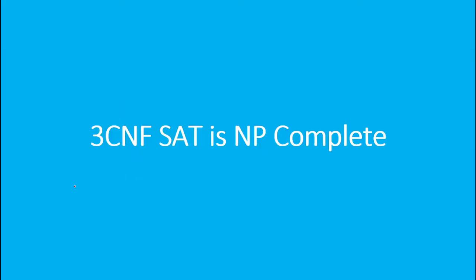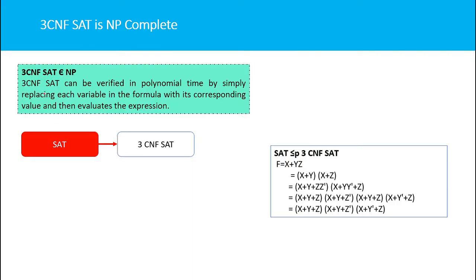To prove 3CNF SAT is NP-complete, first we prove that 3CNF belongs to NP. As with the previous satisfiability problem, we can verify 3CNF satisfiability by simply replacing each variable in the formula with its corresponding value and evaluating the expression. This verification can be done in polynomial time, so 3CNF SAT is an NP problem.